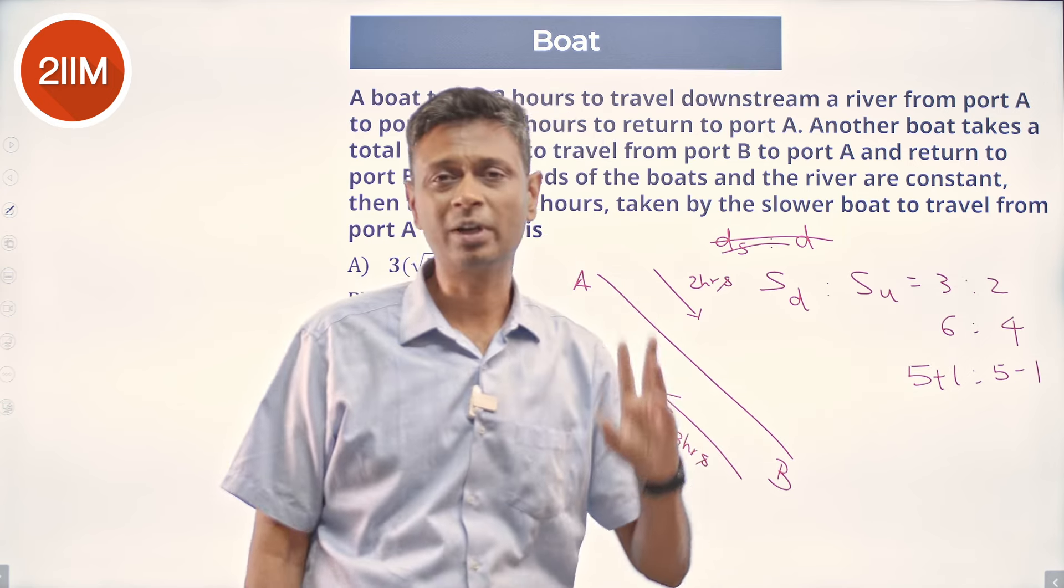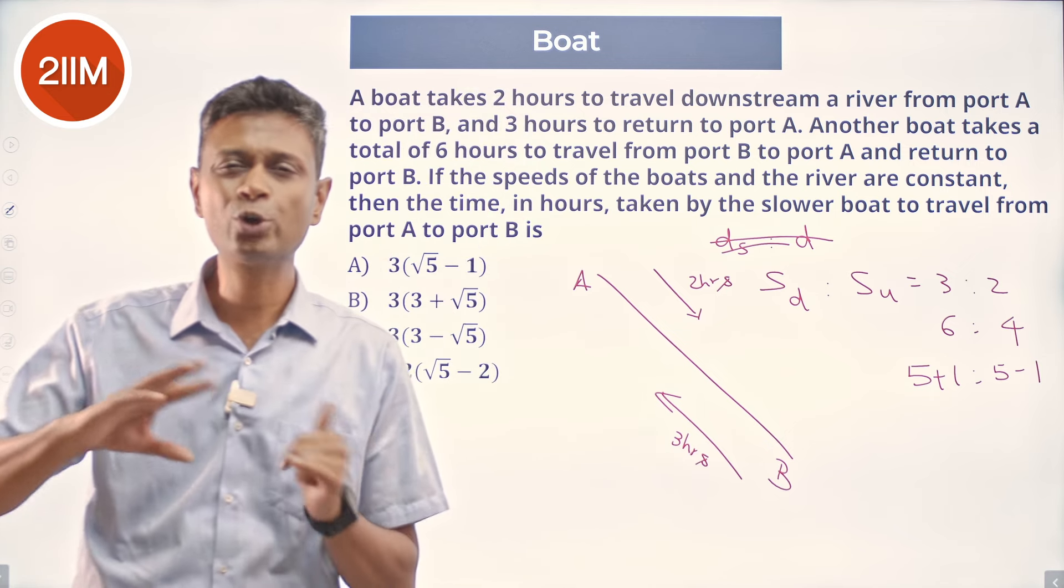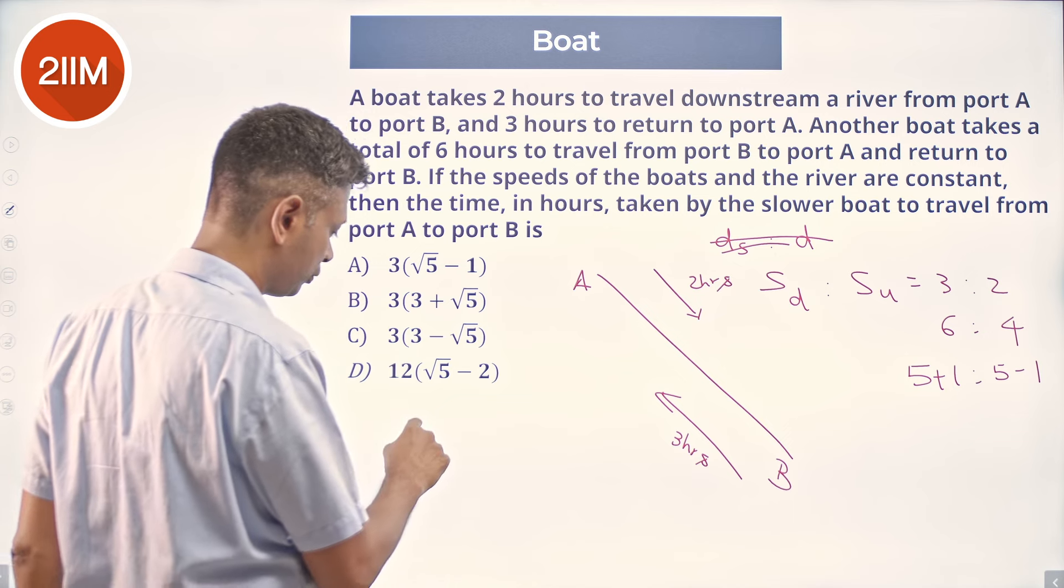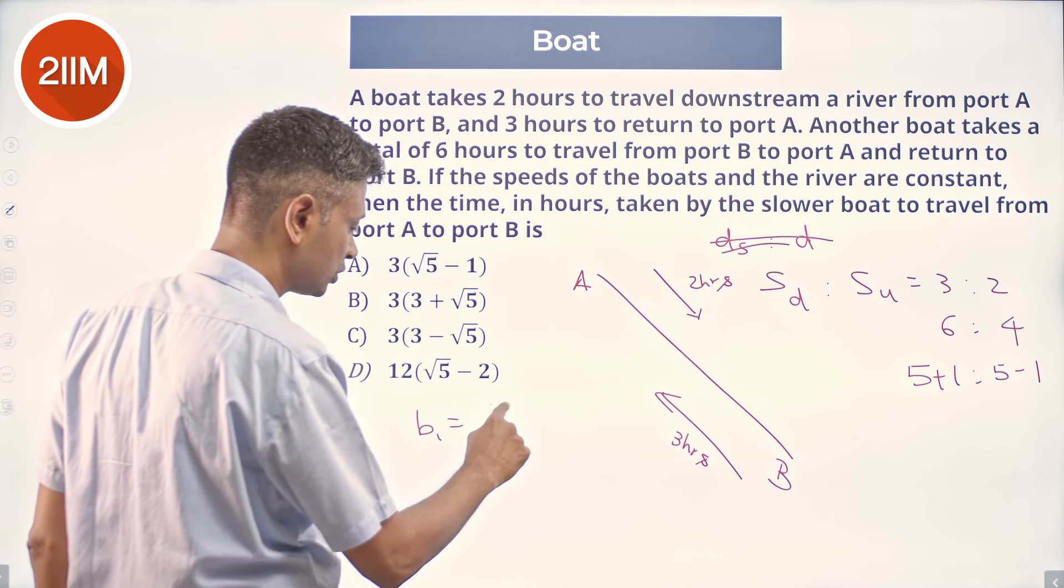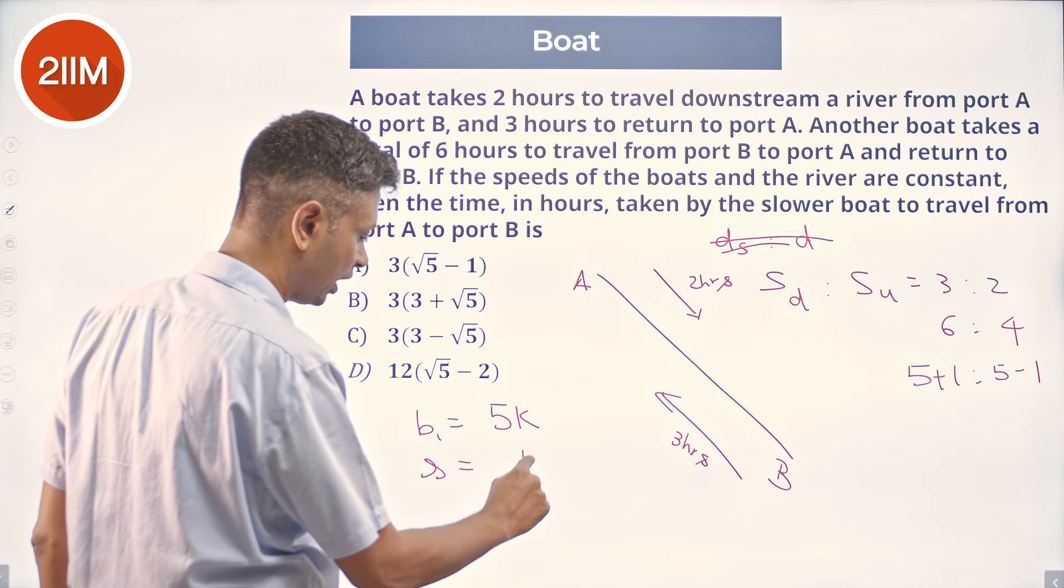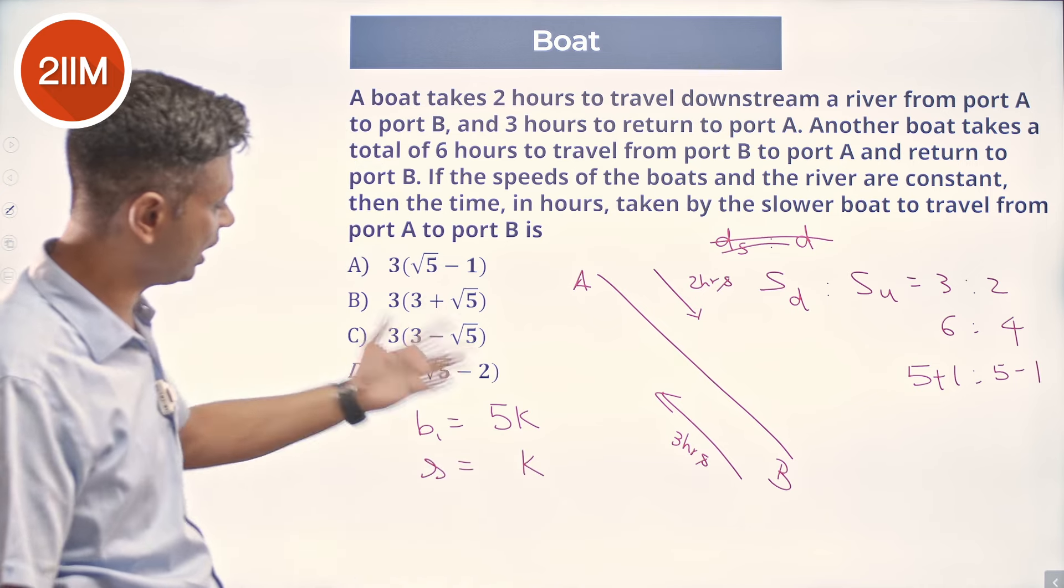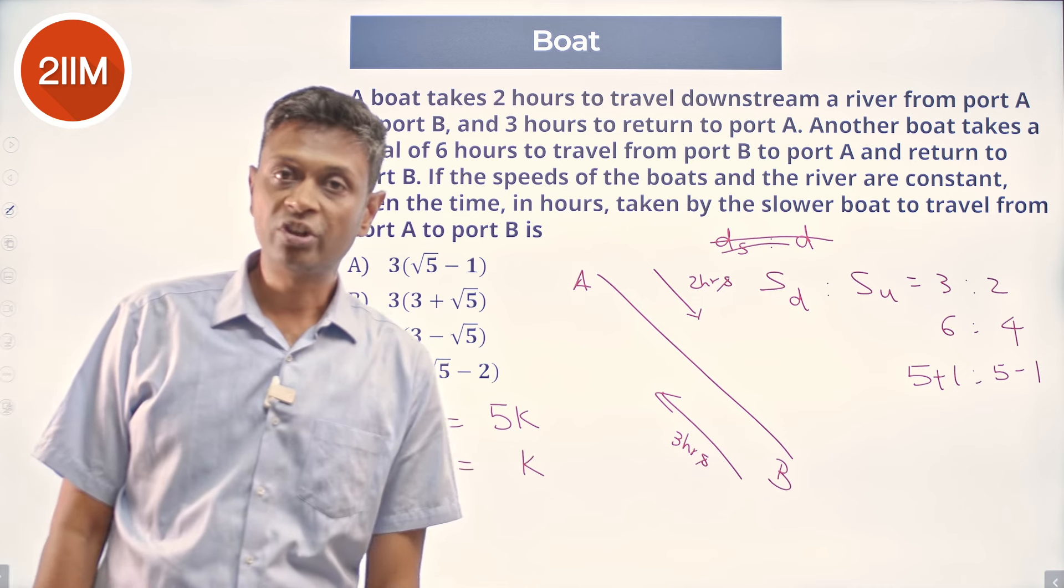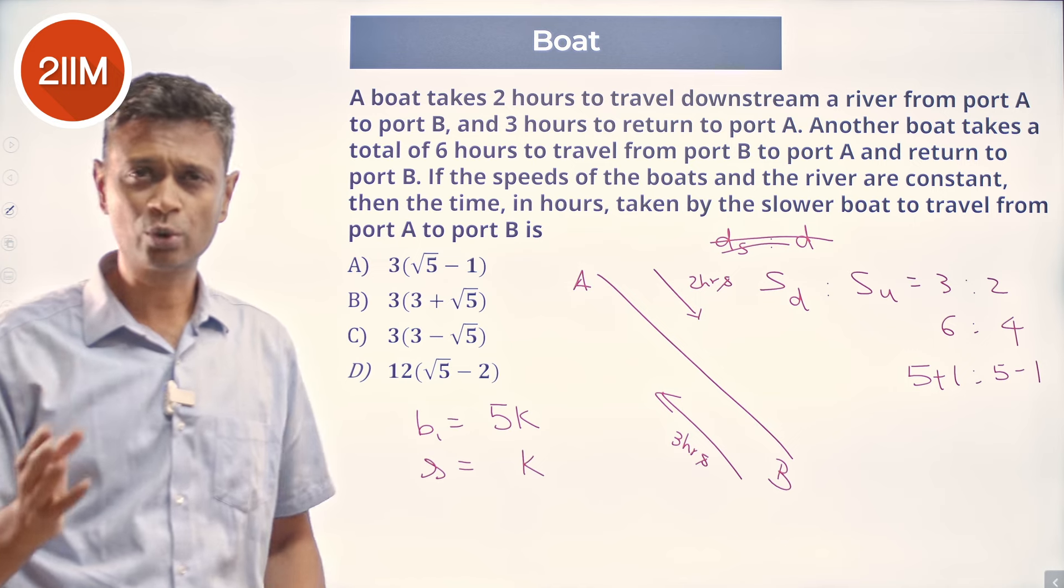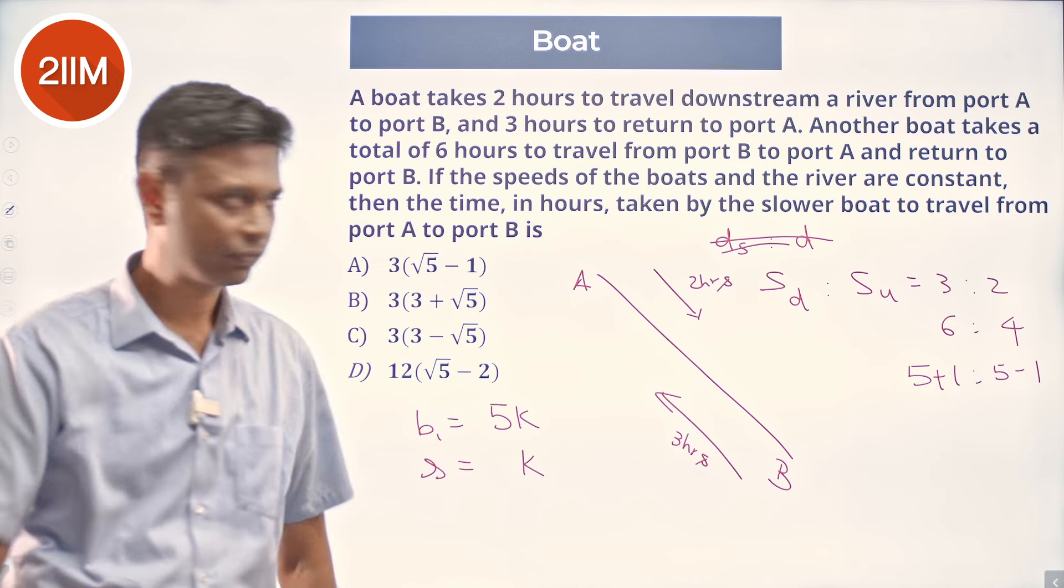So, I am going to say speed of boat 1 is 5K. Speed of stream is K. So, 5K plus K is 6K. 5K minus K is 4K. Ratio is 6 is to 4, 3 is to 2. Time taken should be in the ratio 2 is to 3, right?